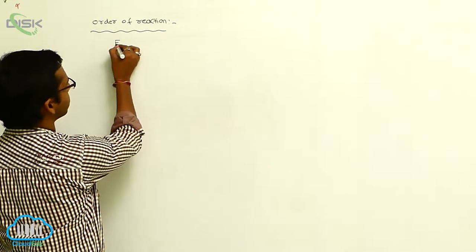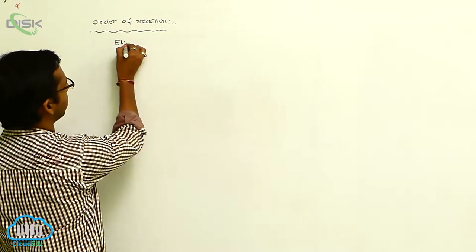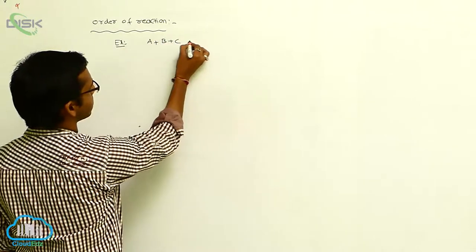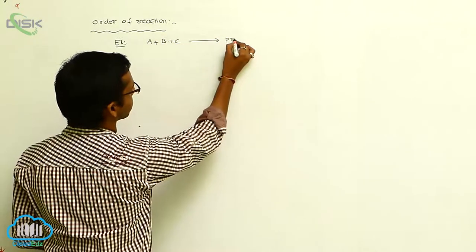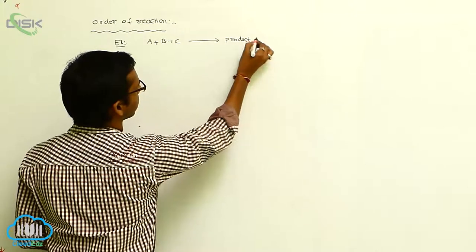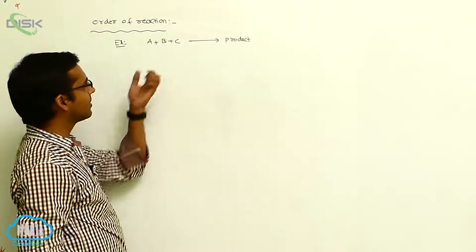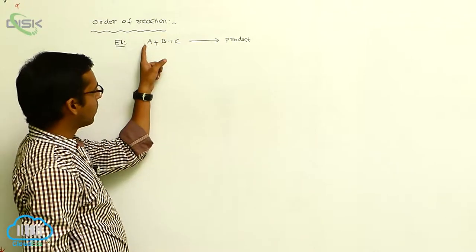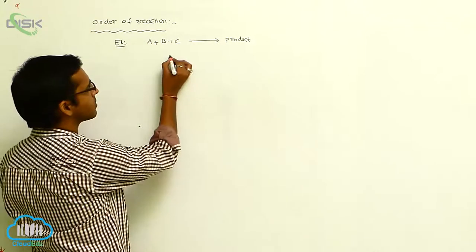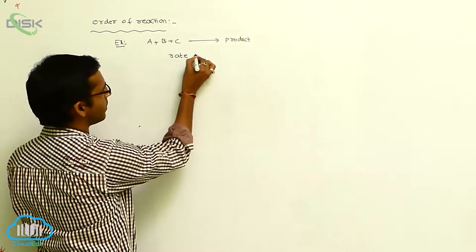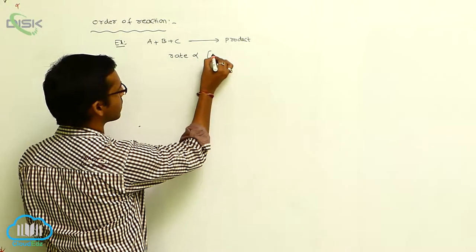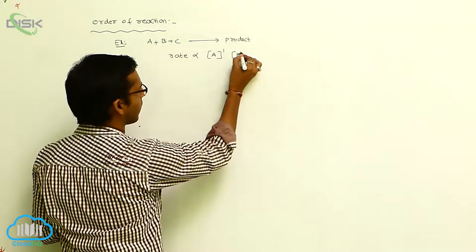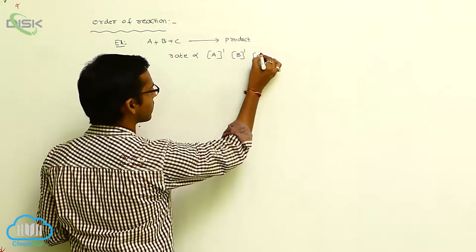So, order of reaction. For example, A plus B plus C is converted to product. Here three reactants are there, and all three reactants have one mole each. So the rate of reaction is directly proportional to concentration of A, concentration of B, and concentration of C.